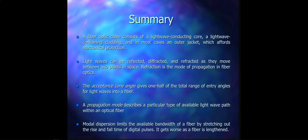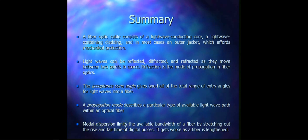Now, the summary of this lecture: A fiber optic cable consists of a light-wave-conducting core, a light-wave-containing cladding, and in most cases an outer jacket for mechanical protection. Light waves can be reflected, diffracted, and refracted as they move between two points; refraction is the mode of propagation in fiber optics. Acceptance cone angle gives one half of the total range of entry angles for light waves into a fiber. Propagation mode describes a particular type of available light wave path within an optical fiber. Modal dispersion limits the available bandwidth of a fiber by stretching out the rise and fall time of digital pulses, and it gets worse as the fiber is lengthened. This is the end of the lecture, thank you so much for watching.